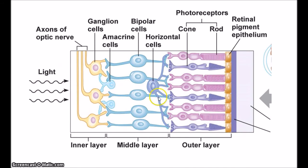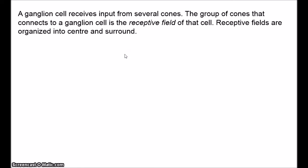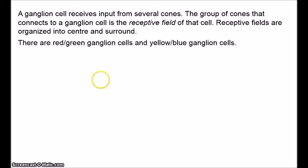I can describe a little bit of the early stages of vision beyond the cones. The retina contains photoreceptors which connect to bipolar cells, which connect to ganglion cells, with horizontal and amacrine cells also influencing the output. A ganglion cell receives input from several cones, and the group of cones that connects to a ganglion cell is called the receptive field of that ganglion cell. In the fovea, we have one cone per ganglion cell, so its receptive field is one cell, providing very fine detail. Receptive fields are organised into centre and surround. Ganglion cells appear to represent the first separation into the red-green and yellow-blue channels.